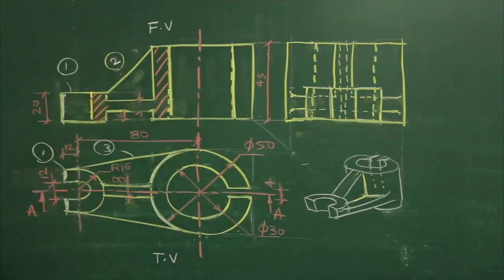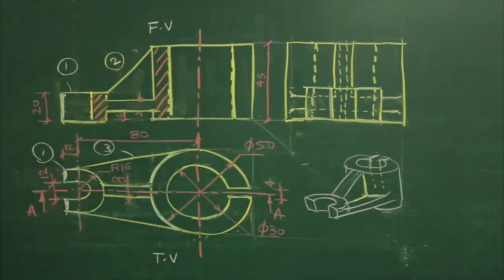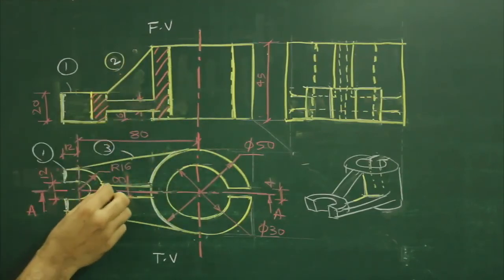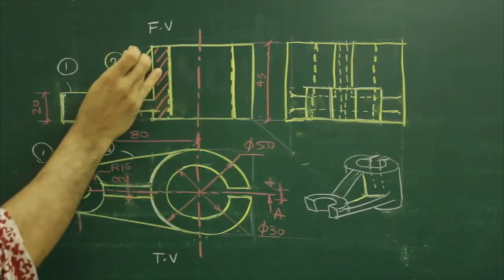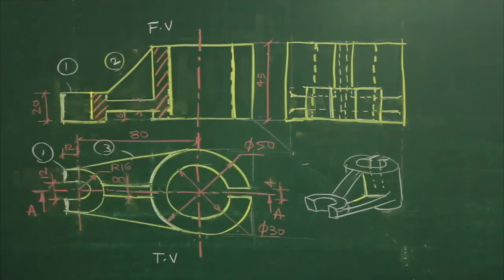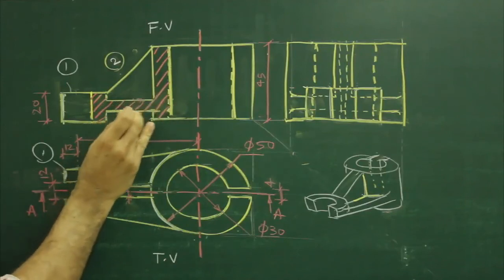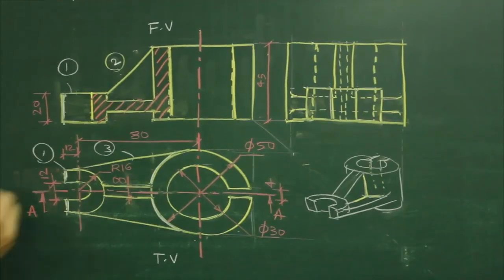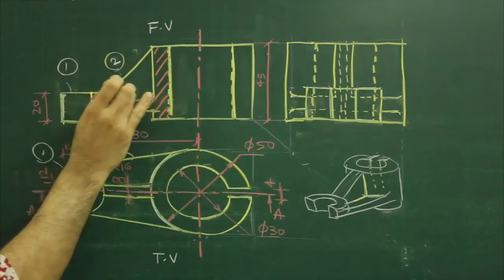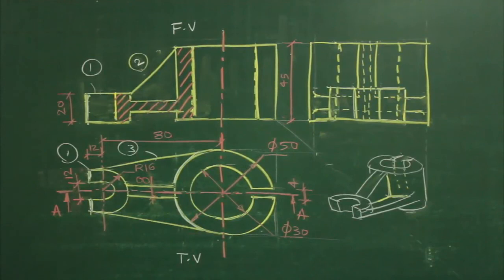Now we need to decide about these two parts. This is a rib and this is also a rib. When you cut like this, you are cutting at a rib, so we won't be hatching in this area. But we will be hatching in the lower part because we are cutting the lower rib along the width. Always remember, we will hatch the minimum area in terms of rib — whenever you have a minimum area for the rib, we hatch that portion compared to the maximum area. So we are done with the sectional front view as well.